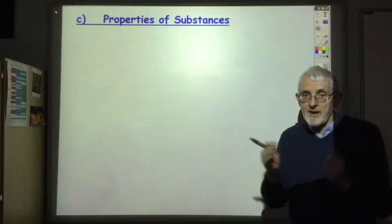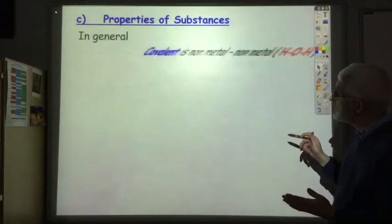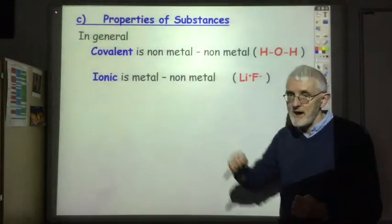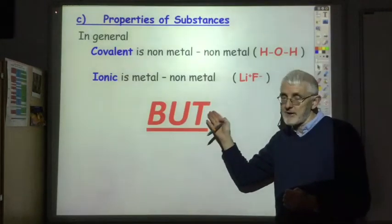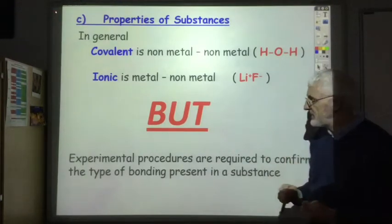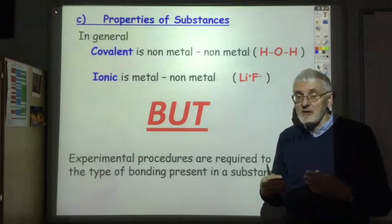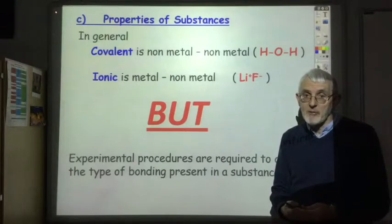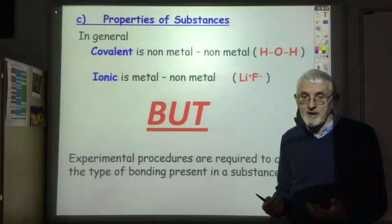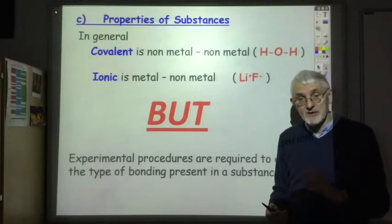In general, if it is non-metal to non-metal it will be covalent, and if it is metal to non-metal it will be ionic. However, experimental procedures are required to confirm the type of bonding. You will find some metal to non-metal compounds that are covalent. You would know this because they wouldn't have the properties of an ionic compound - for example, titanium chloride is a liquid at room temperature, and since all ionic compounds are solid at room temperature, it must be covalent.